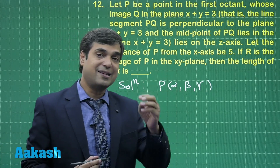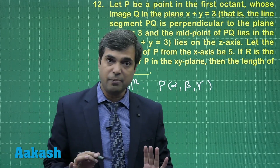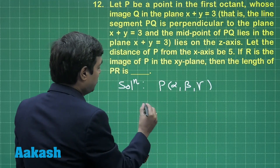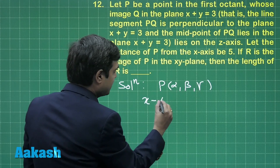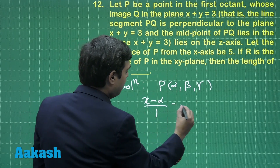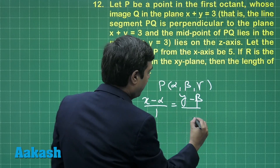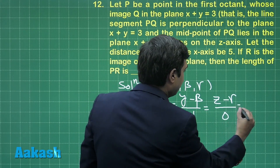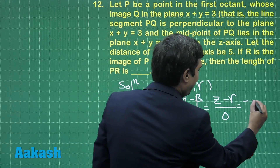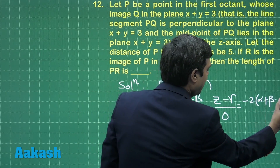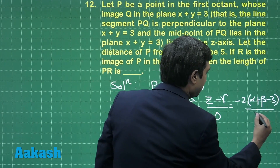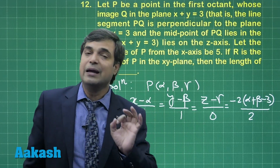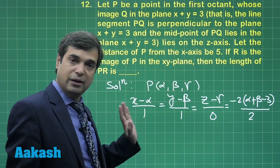A point on the z-axis can be taken as (0, 0, z₁). First we try to find its image with respect to the given plane. Image is given by: (x − α)/1, (y − β)/1, (z − γ)/0 equals minus twice of (α + β − 3) divided by 2. This is the image of the point P with respect to the plane x + y = 3.